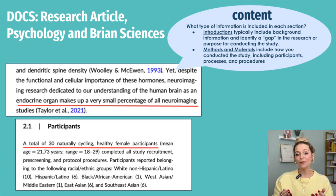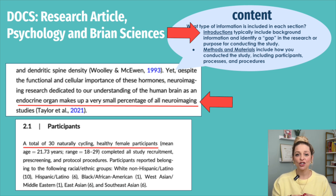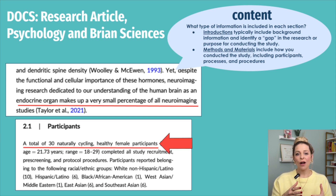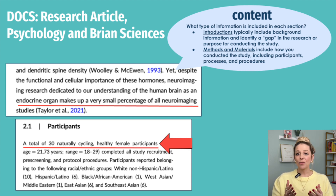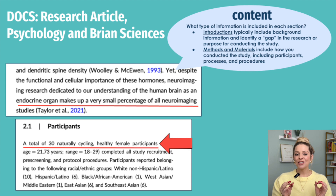Next is Content, or the information that fills each section. Introductions typically feature background information, a literature analysis, recognizing a gap in the research, and the purpose for the study. The Methods and Materials section discusses how you conducted your study, including participants, processes, procedures, and materials used. Every discipline differs a little bit — some fields might have participants, whereas others just have materials — so reference sample papers to ensure your writing aligns with your discipline's expectations.